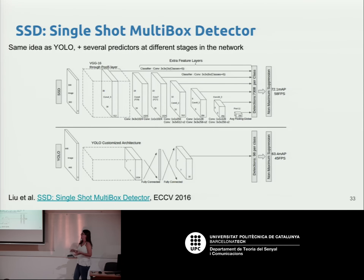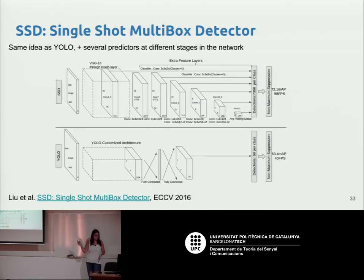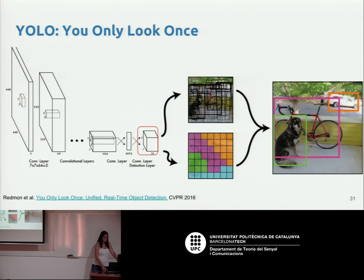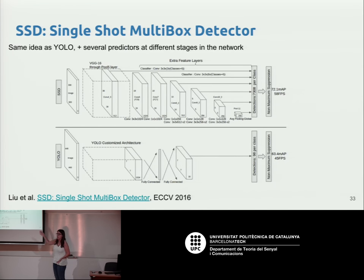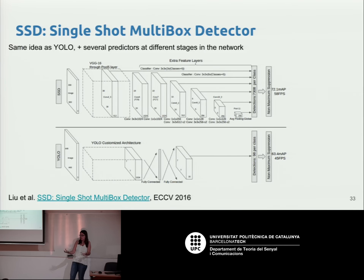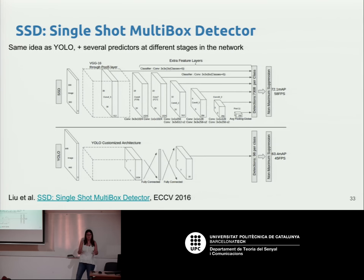Single Shot Multibox Detector (SSD) extended this idea by predicting bounding boxes at multiple scales of the network rather than at a single stage. At different stages of the convolutional neural network, predictors are trained to detect objects. Later convolutional stages have a wider field of view and are specialized for larger objects, while earlier stages that capture local features are specialized for smaller objects. This multi-scale prediction approach achieved better performance than predicting at a single stage.